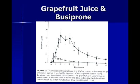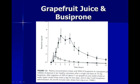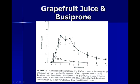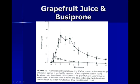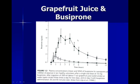Buspirone is one of those drugs dramatically affected by grapefruit juice. Looking at this figure, the open circles show plasma concentrations of buspirone after a single dose, while the solid circles show concentrations after consuming seven ounces of grapefruit juice three times a day for two days before taking buspirone. The result is a three- to four-fold increase in the amount of bioavailable drug, so you want to be very careful taking drugs in conjunction with grapefruit juice.